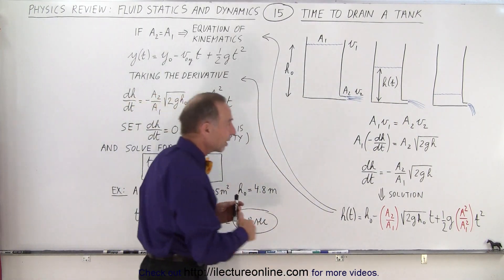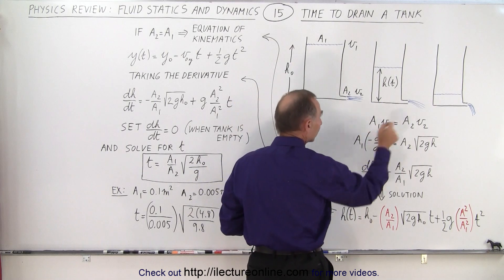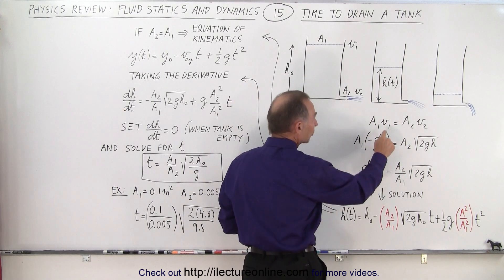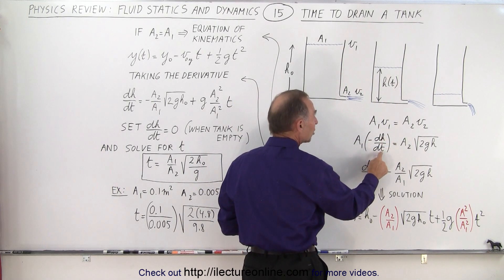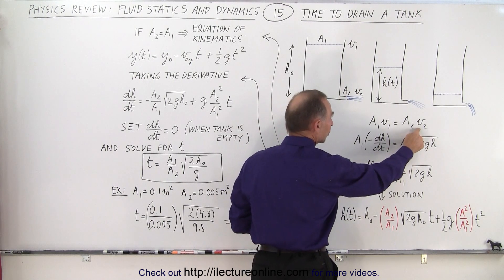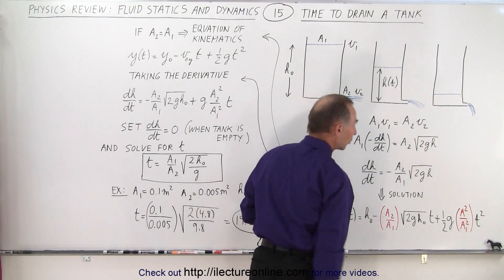So we start with the same equation, a1 v1 equals a2 v2, and now we're going to replace v1 by the rate of change of the height, and v2 is going to be replaced by the square root of 2gh.